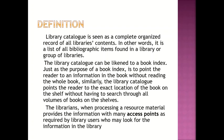Let's look at the definition of a catalog. A library catalog is seen as a complete, organized record of all a library's content. In other words, it is a list of all bibliographic items found in a library or group of libraries. The library catalog can be likened to a book index. Just as the purpose of a book index is to point the reader to information in the book without reading the whole book, similarly, the library catalog points the reader to the exact location of the book on the shelf without having to search through all volumes. The librarian, when processing the resource material, provides the information with many access points as required by library users.